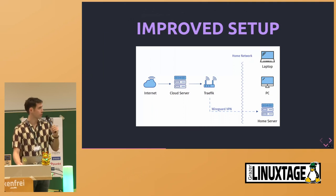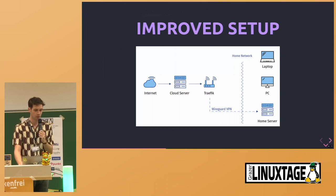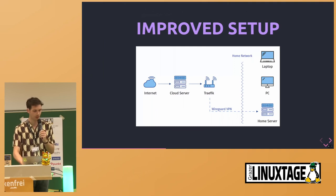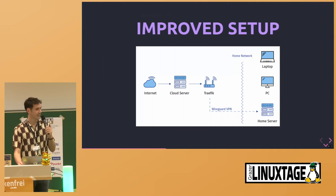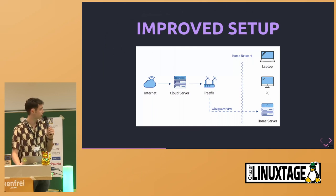An improved setup could be a virtual private server — a VPS — running in some cloud. It can be Hetzner, it can be net cup, whatever. It doesn't have to be big; it basically only has to manage all of your traffic to your home lab services. My home lab is mostly accessed by family and friends, so not a lot of traffic. This setup would mean that all of your devices — at least your home server and your server running the reverse proxy — would be in the same WireGuard VPN.